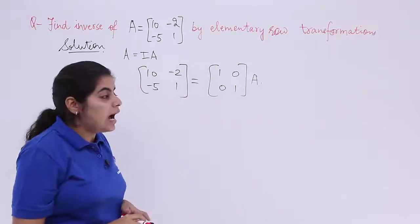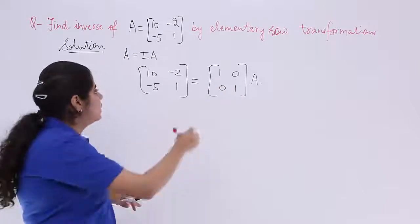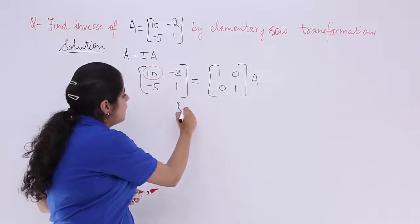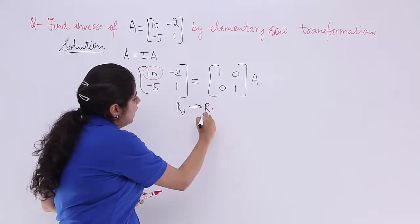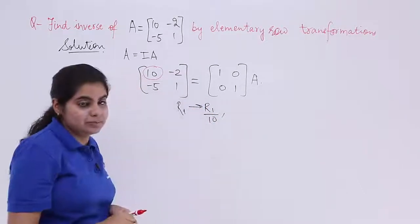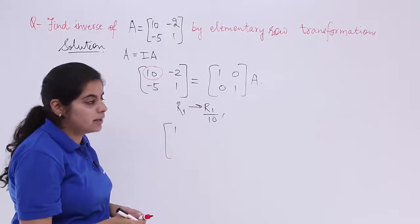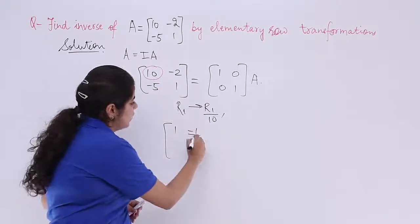Now I need 1, 0, 0, 1. But here it is not 1. It is 10. So what do I need to do? I need to apply R1 in a manner that R1 divides by 10. So it becomes 1 because 10 by 10 is 1. Minus 2 by 10 is minus 1 by 5.